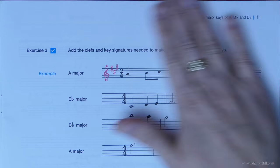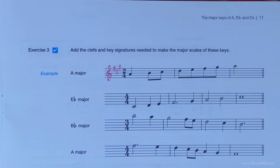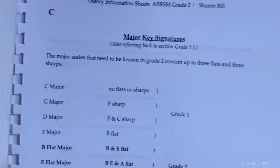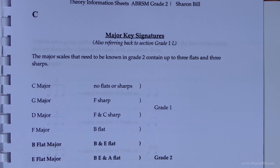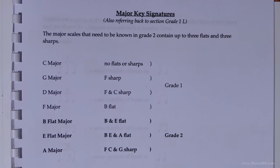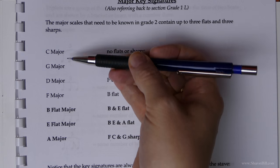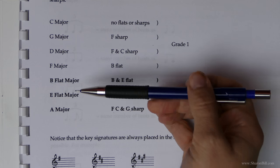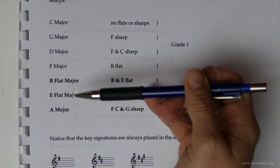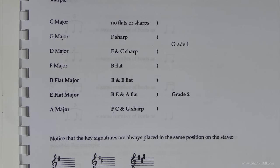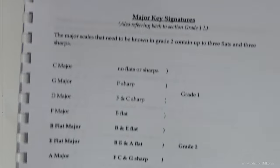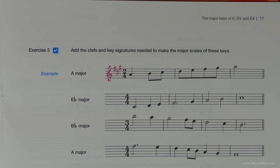Turn in your workbook to page 11 and we'll carry on. This is section C in your PDF information sheets and we're looking at major key signatures. In addition to the key signatures covered in grade 1, there are 3 new key signatures - we're working up to 3 sharps and 3 flats now. There's no new information; we're just applying it in different ways as each question asks us.